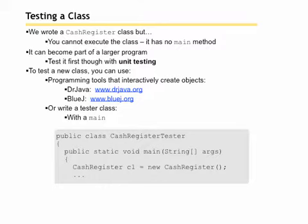It says here to test a new class you can use programming tools that interactively create objects. We're going to write our own. We're going to test our own by writing our tester class with a main method. Notice here we call it public class CashRegisterTester. That's very common and we instantiate an object of type CashRegister in the main method.